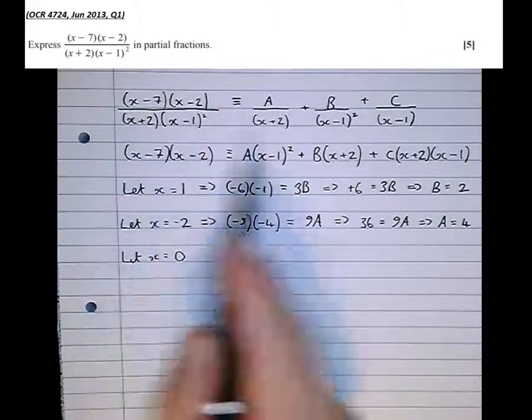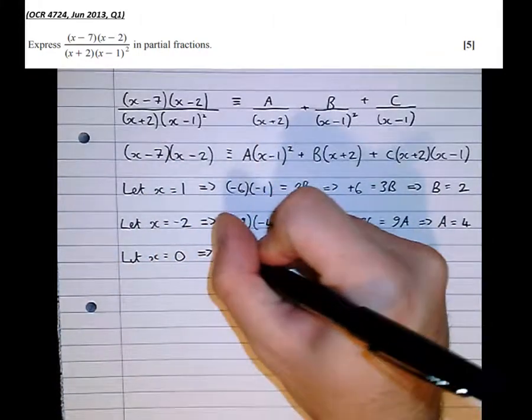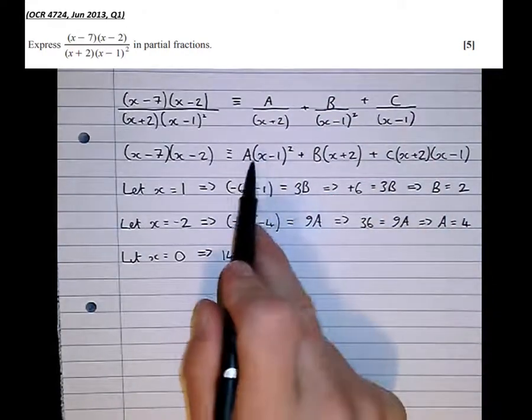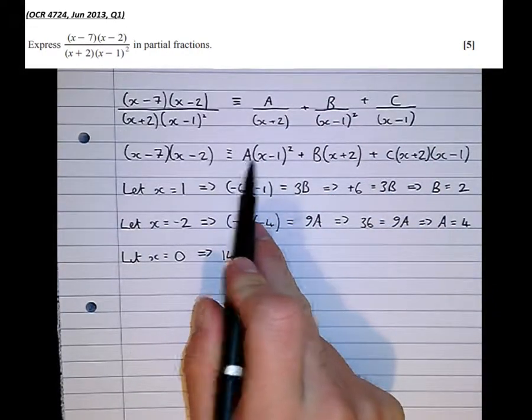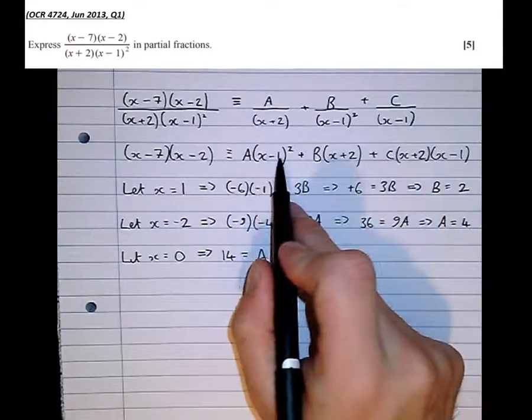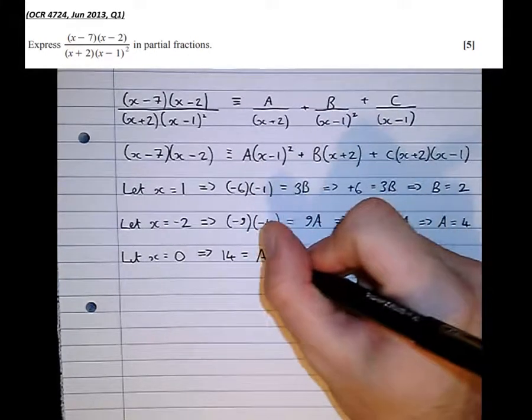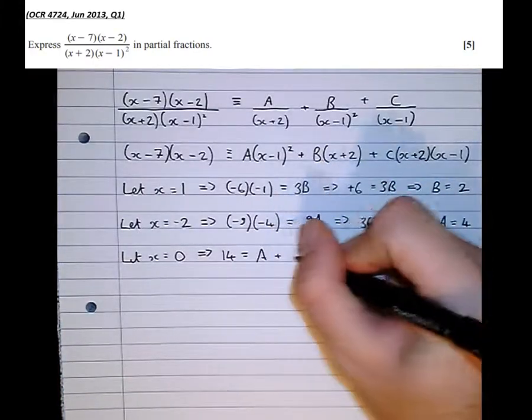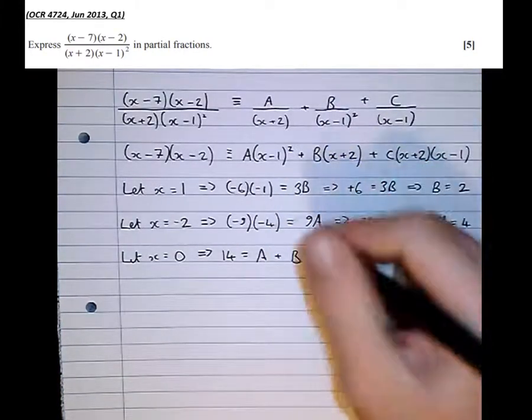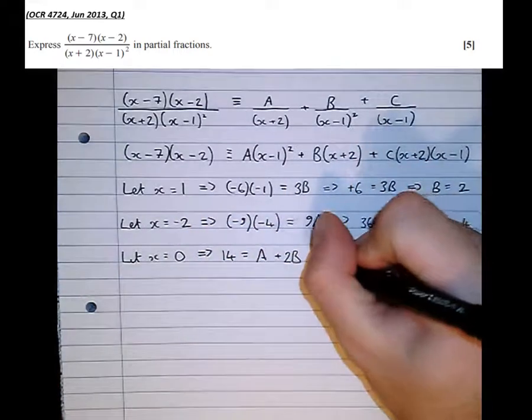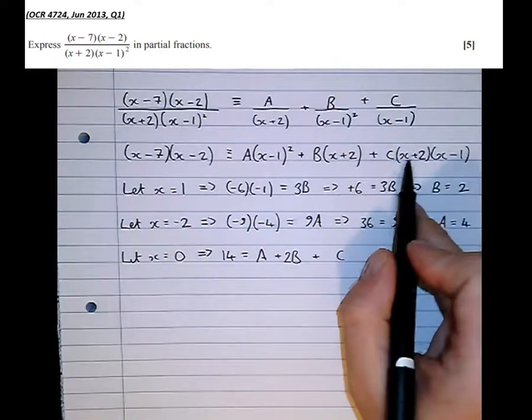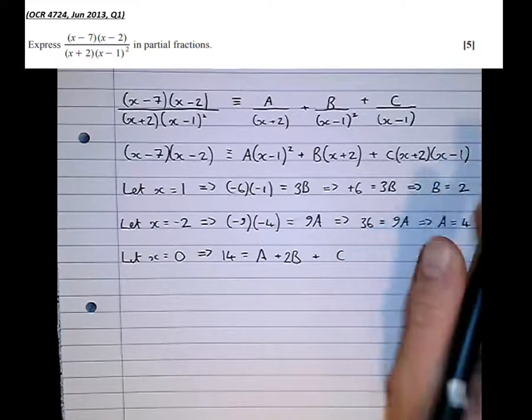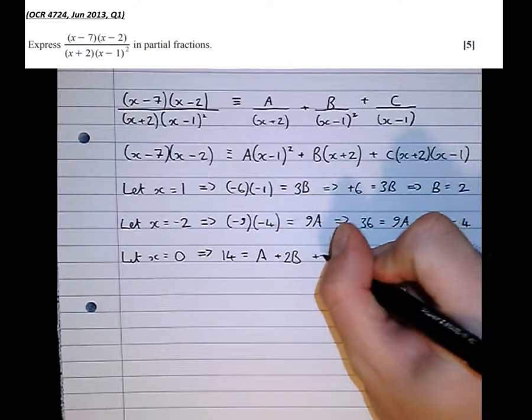So let x equal 0. So we get minus 7 times minus 2, which is 14. Equals a times 0 minus 1 squared, so that's just 1a, plus b times 0 plus 2, that's 2b, plus c times 0 plus 2 times 0 minus 1, which is minus 2c.